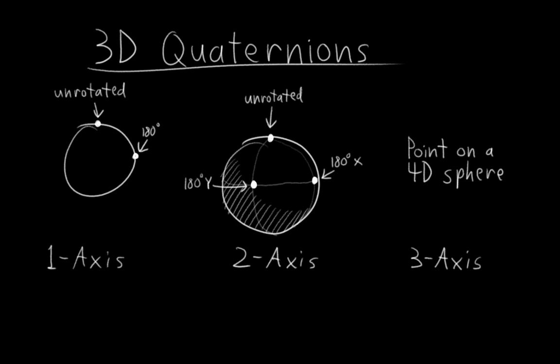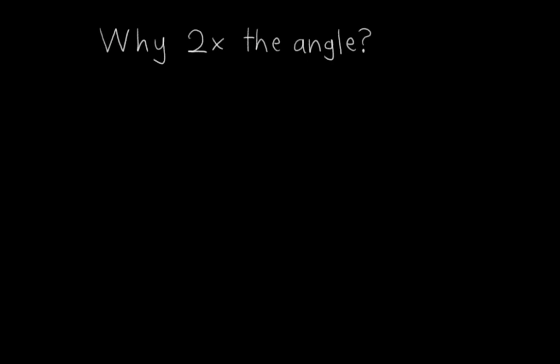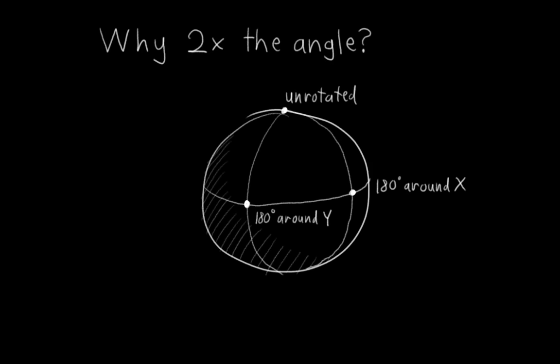So you may be wondering, why do quaternions double the angle? Why not just leave it alone? Well, let's take a look at the two-axis three-number case again. What would happen if these two points represented 90 degrees around the x and y-axis instead of 180 degrees? Specifically, what two points would represent 180 degrees around x and y? Well, let's try x first. Intuitively, we would just keep following the circle to the bottom of the sphere, right? Okay, cool. So that point now represents 180 degrees around x.